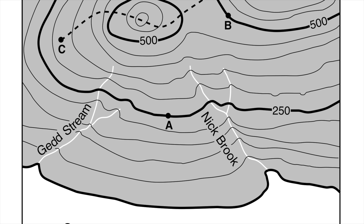Things would change a little bit if I didn't know that was the ocean — if I thought maybe that was a lake of some sort, that might make things a bit more complex. However, I can still rely on the rule that water is always going to flow downhill. So if I look at my elevations, I see I have a 500 index contour, and as you go towards the bottom of this map the elevations are getting lower, which tells me the streams are flowing generally to the south.